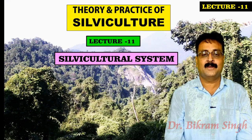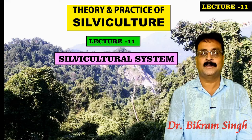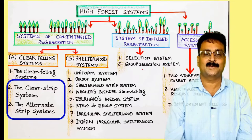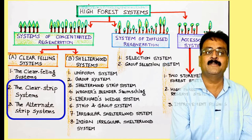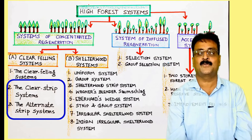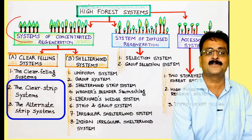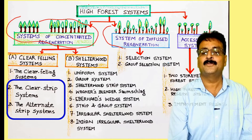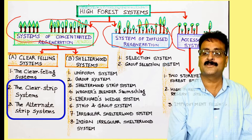In the previous lecture, we have gone through the clear felling system and the classification of silviculture systems. We have already discussed about the high forest and the coppice forest. In the high forest system, we have the system of concentrated regeneration, the system of diffuse regeneration, and the accessory system.